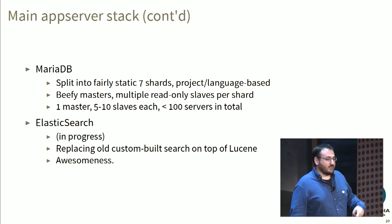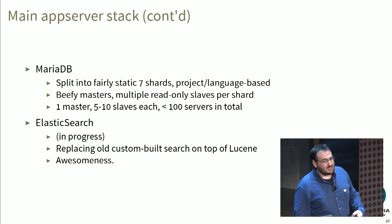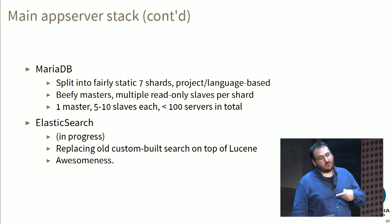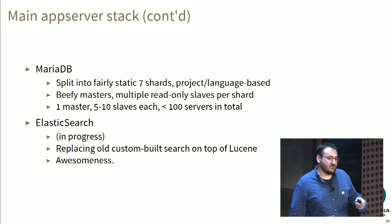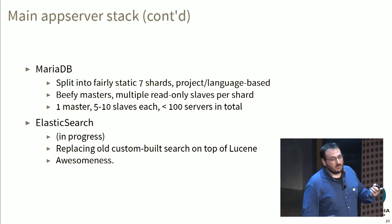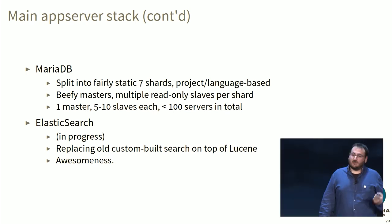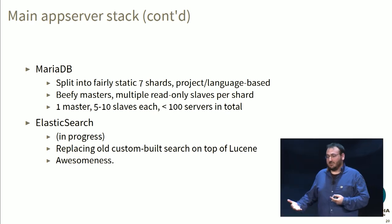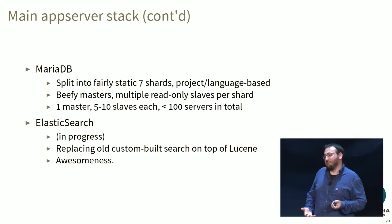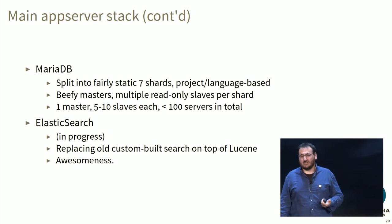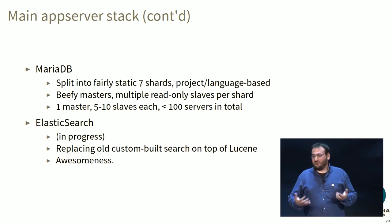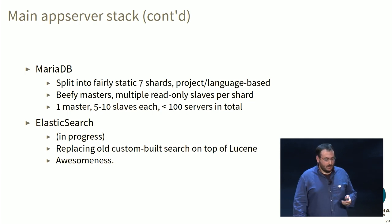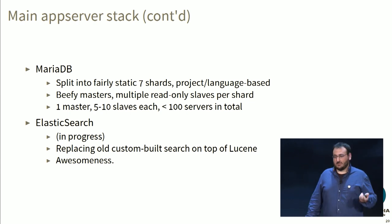As a secondary data store, we use Elasticsearch. We're switching to it for search from our previous custom-built service built on top of Lucene. We have about 16 servers with Elasticsearch now. So far we're very satisfied with its scalability and fault tolerance characteristics.